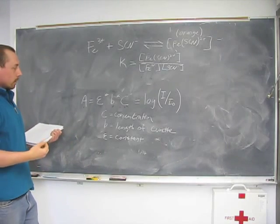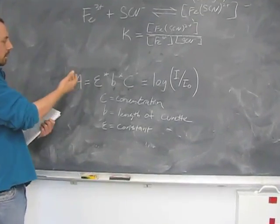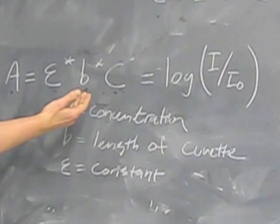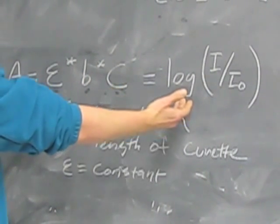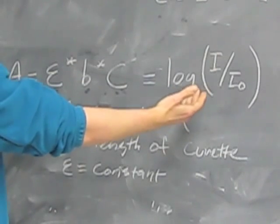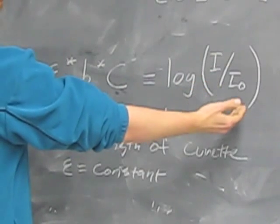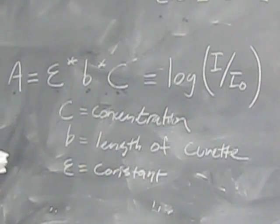The mathematical relationship that we're going to be using is called the Beer-Lambert law, which is expressed here. The absorbance is equal to some constant times the length of the cuvette times the concentration, which is also equal to the negative log of the amount of light transmitted divided by the total amount emitted from the spectrophotometer.